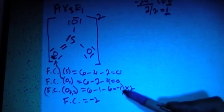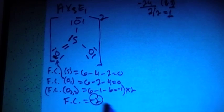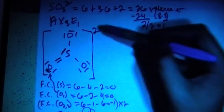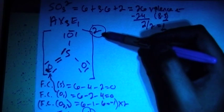So 0, 0, and then minus 1, minus 1 gives you a formal charge of minus 2 overall, which is what matches up to the minus 2 charge on the ion.